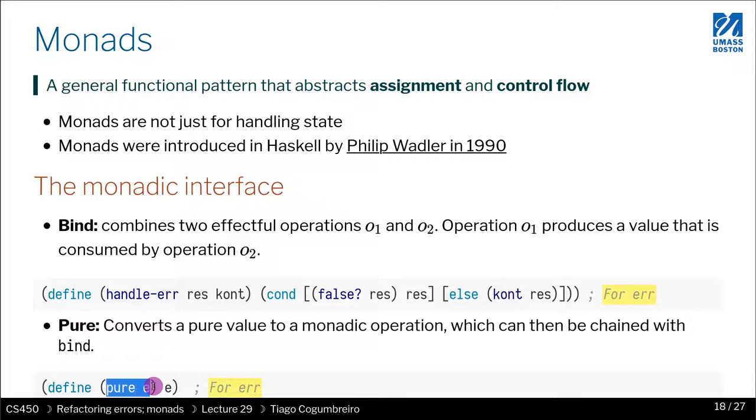You know, if you see a value, you return an EFF that takes the state and the value. And what pure is doing in terms of errors is just returning the value itself. There's nothing to do, basically.